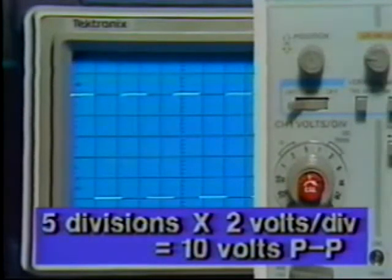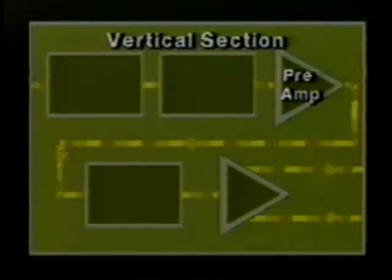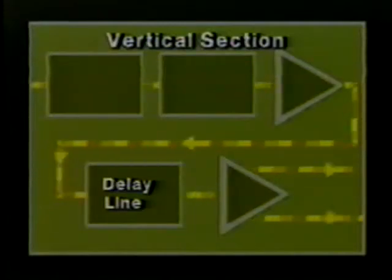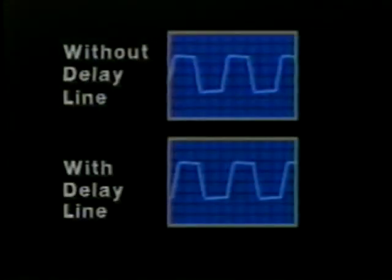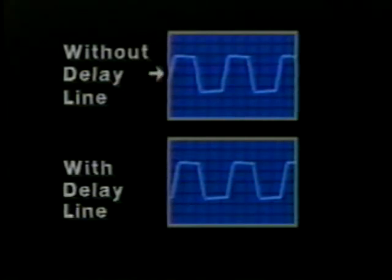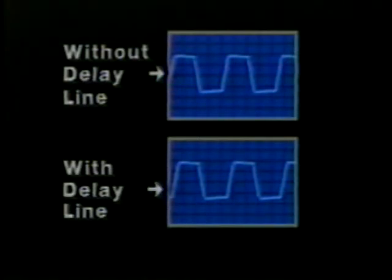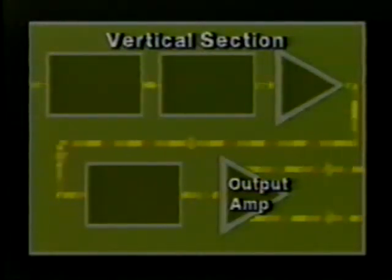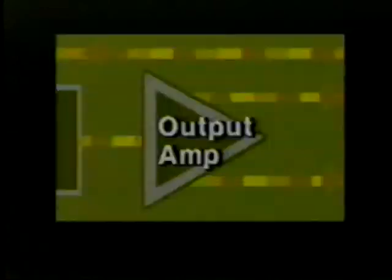Following the vertical input amplifier, the next block the incoming signal encounters is the delay line. This line delays the signal output from the vertical input amplifier for a short period of time so the horizontal sweep generator circuitry has time to initiate a sweep before the vertical signal reaches the CRT vertical deflection plates. This coordination of vertical and horizontal timing by the delay line lets us view the signal's leading edge — without delay the signal would look distorted, but with delay it appears correctly.